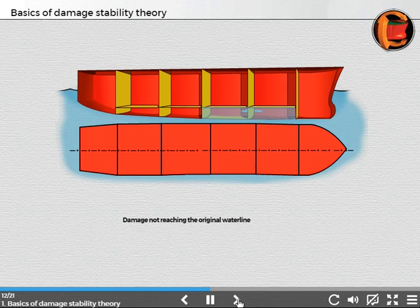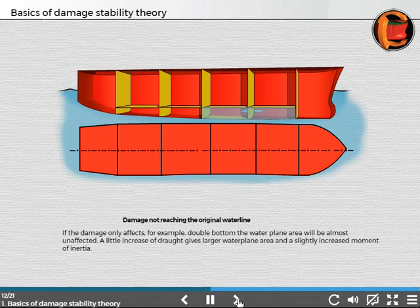Damage not reaching the original waterline. If the damage affects, for example, the double bottom, the waterplane area will be almost unaffected. A little increase in draft gives a larger waterplane area and a slightly increased moment of inertia.